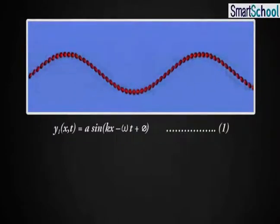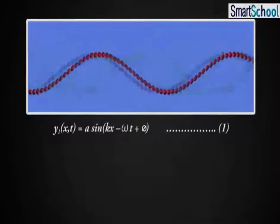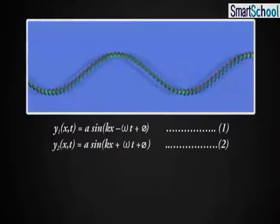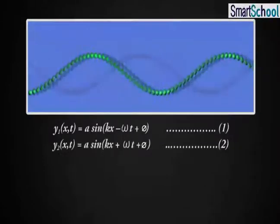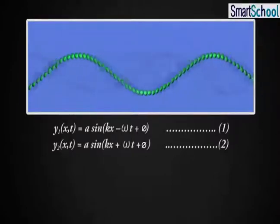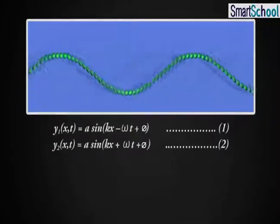Wave travelling in the negative direction of x-axis is y₂(x,t) is equal to a sin(kx + ωt + φ). Let it be equation 2.